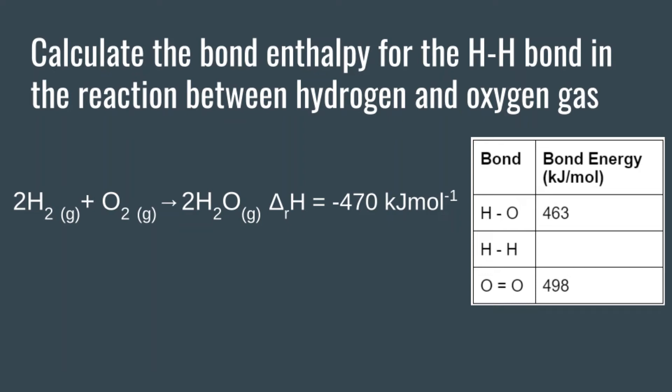We can rearrange this same formula to calculate the bond energy of one specific bond if we know the enthalpy change for the reaction. In this example, hydrogen gas reacts with oxygen gas to produce water, releasing 470 kilojoules per mole. It's important to note that we no longer have a one-to-one ratio — here we have two hydrogen molecules reacting with one oxygen to produce two moles of water.